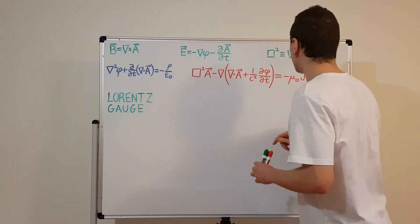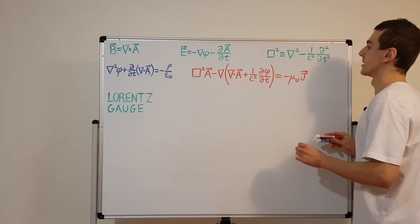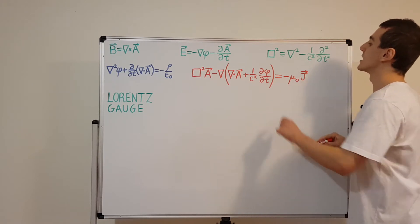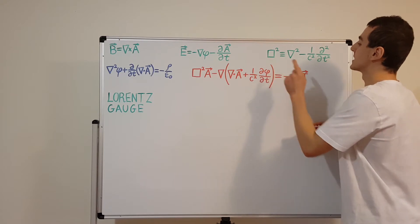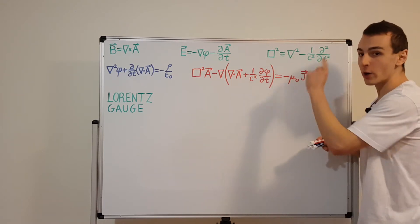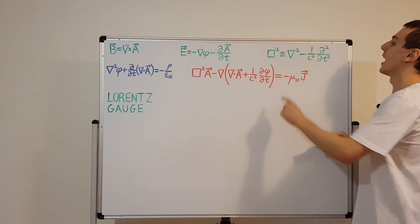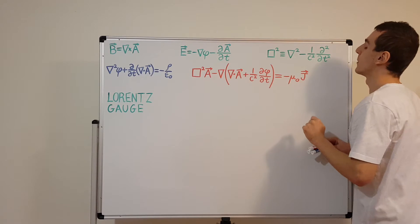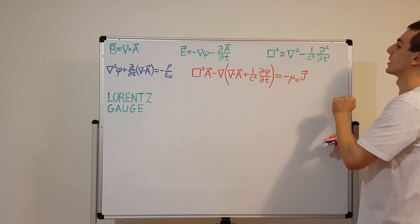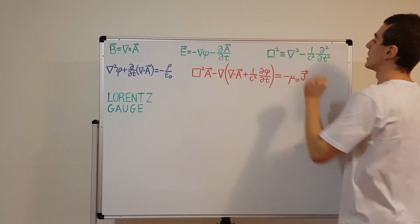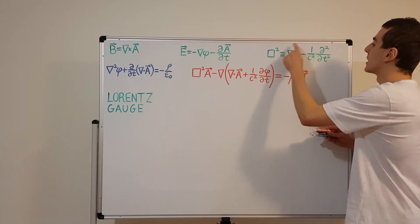Another thing written in green is the D'Alembertian, or D'Alembert operator. The D'Alembertian is represented by a box, sometimes written with a superscript 2 and sometimes the 2 is omitted. For the purposes of this video I'm going to include the 2 to keep it consistent with the second order derivatives on the right hand side. This is just a shorthand notation. The D'Alembertian operator is a generalization of the Laplacian operator.